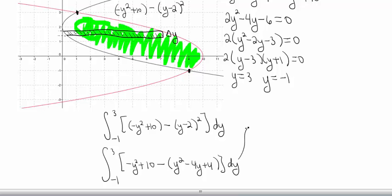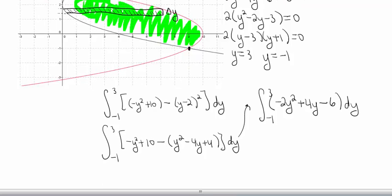And then so that's going to give us negative 1 to 3. We're going to end up with negative 2y squared plus 4y minus 6. And again, that's dy. This is a polynomial, so it should be fairly straightforward to integrate.